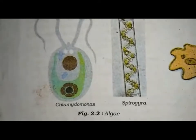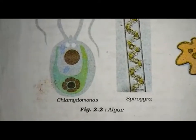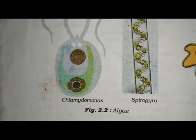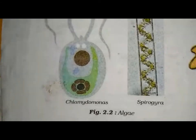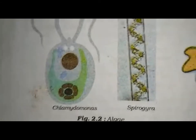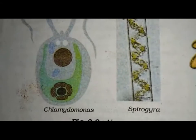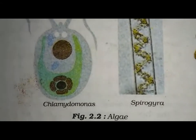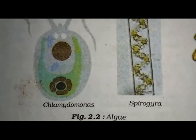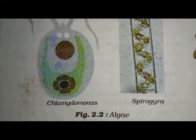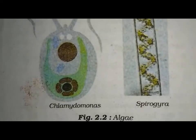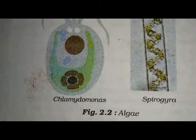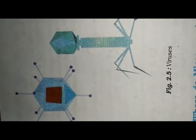Next is algae. When you visit near a pond, tank, or river, you must have seen some green or dark green thing spread over the water surface — that is algae. Algae are plant-like organisms and contain chlorophyll. Algae are also called the grass of water. Examples of algae are Chlamydomonas, Spirogyra, and Chlorella.